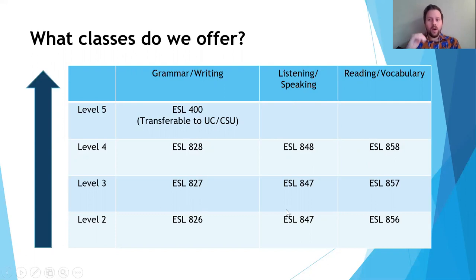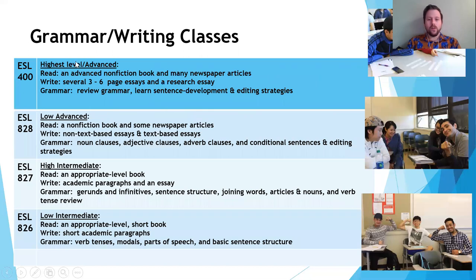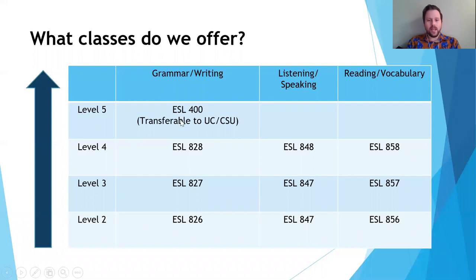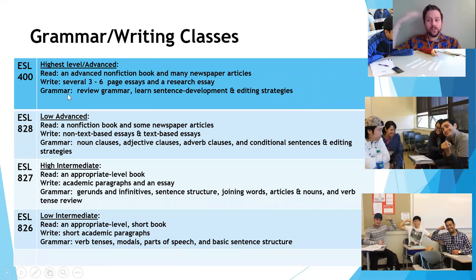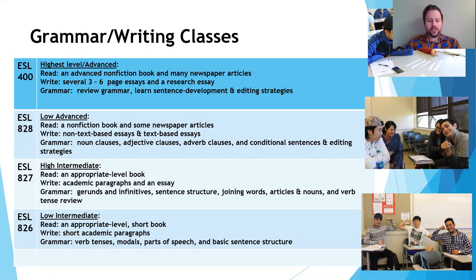For our grammar and writing classes, we have classes that range from low intermediate all the way to high advanced. Our ESL 400 class is a UC transferable course, transferable to UC and CSU, and this is the last class before students transfer to English 100 or English 105. If you start in our lowest level, ESL 826, low intermediate, you will read an appropriate level book and write short academic paragraphs. The grammar you will study includes verb tenses, modals, parts of speech, and basic sentence structure.